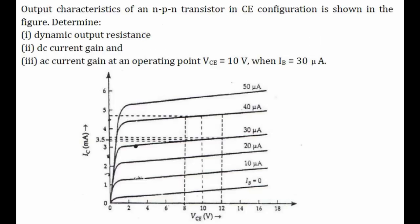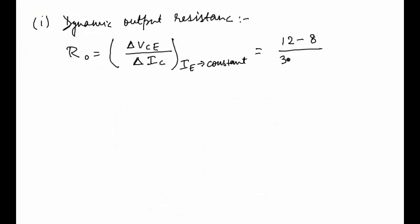Here we have this is 12 minus 8, and the corresponding values for IC is 3.6 and 3.4, so this is 3.6 minus 3.4 milliamperes. We will be multiplying it with 10 to the power minus 3, so this is nothing but 4 by 0.2 into 10 to the power minus 3, which comes out to be 20 kilohm. So this is the answer for our first part.